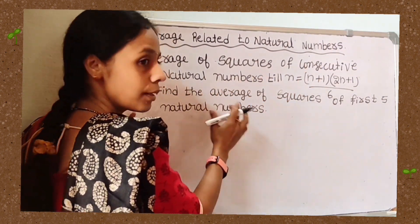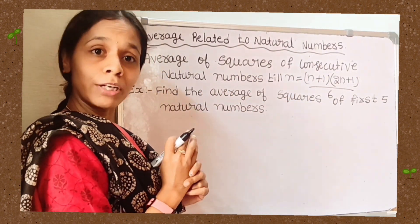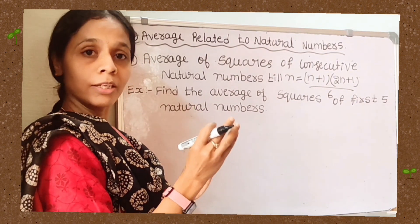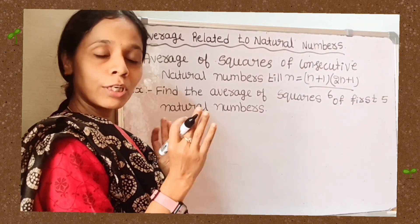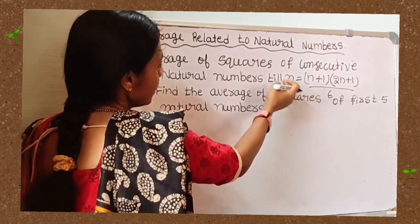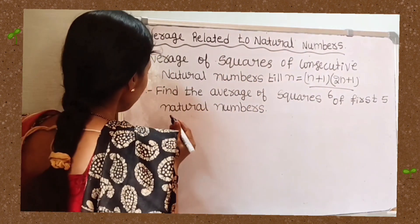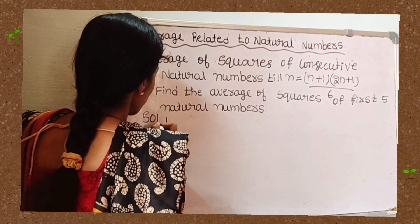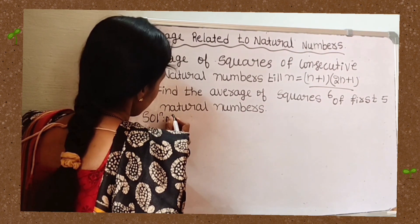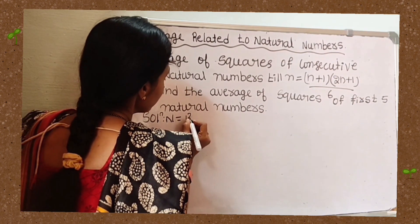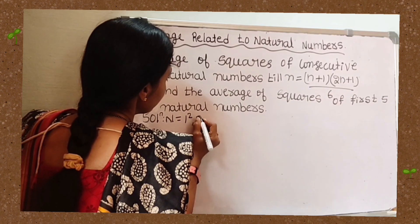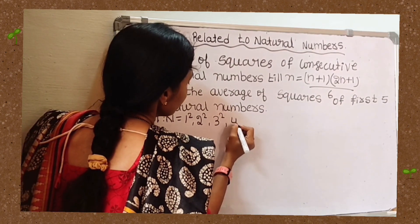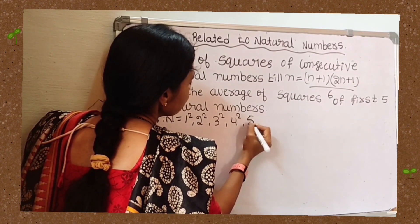Take an example: find the average of squares of the first five natural numbers. The first five natural numbers are 1, 2, 3, 4, 5. In square form, these are 1², 2², 3², 4², 5².